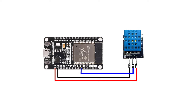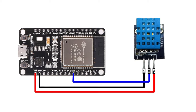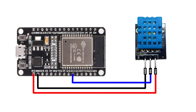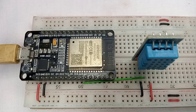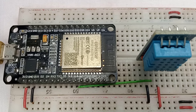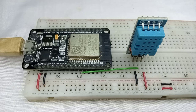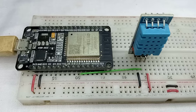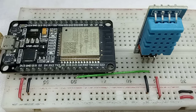Next, here is the wiring diagram. You just follow it to make connections. I have connected the ESP32 and DHT11 sensor on the breadboard. You need to double-check the wiring to avoid hardware damage, so make the connections carefully.